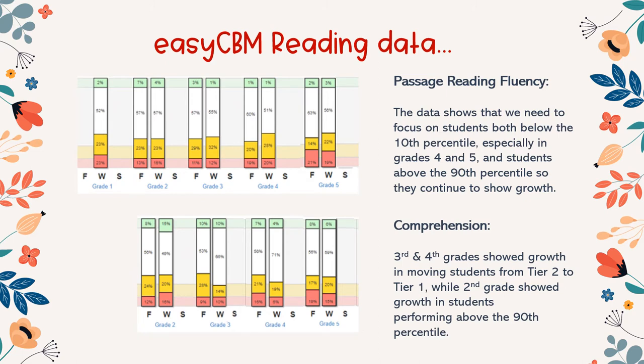Our EZCBM reading data is shown here. At the top, we have passage reading fluency, where students do a one-minute timed read. According to our data so far this year, we need to focus on students below the 10th percentile, especially in grades 4 and 5, and students above the 90th percentile so they continue to show growth. Below is our comprehension data. Students in 3rd and 4th grades showed growth moving from Tier 2 to the Tier 1 range, while 2nd grade students showed growth in those performing above the 90th percentile.